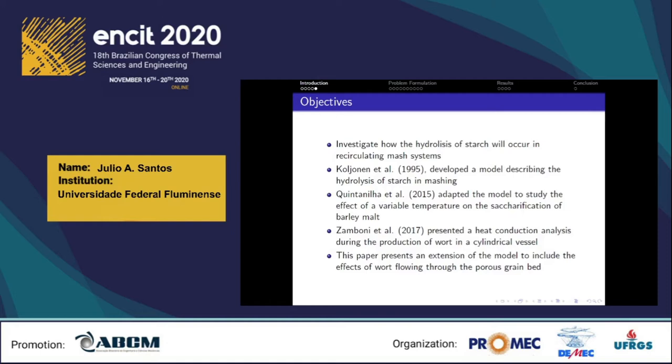The objective of the study is to investigate how the hydrolysis of starch occurs in recirculating mash systems. Kojouen developed a model describing the hydrolysis kinetics of starch in mashing. Quintanilla adapted the model to study the effect of variable temperature on the saccharification of barley malt. Later, Zamboni presented a heat conduction analysis during the production of wort in a cylindrical vessel. This paper presents an extension of the model to include the effects of wort flowing through the pores of a grain bed during mashing.